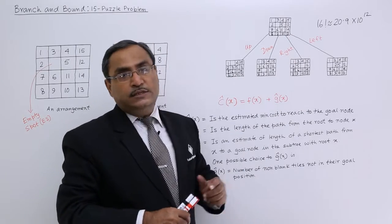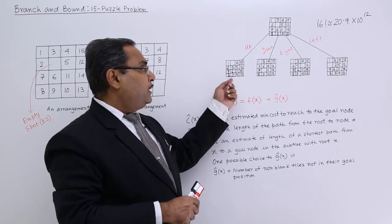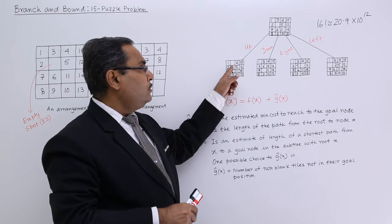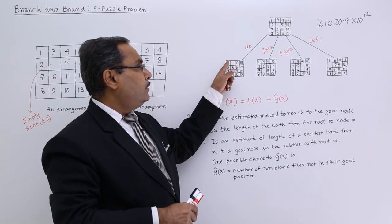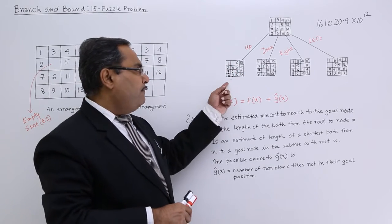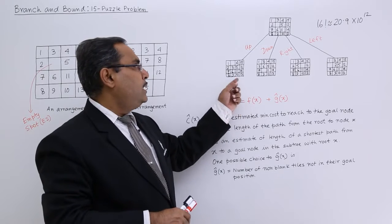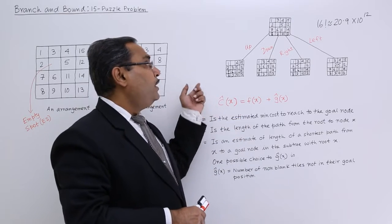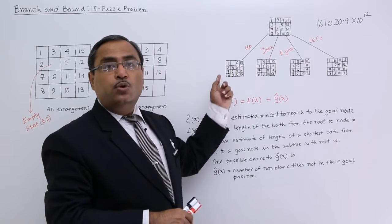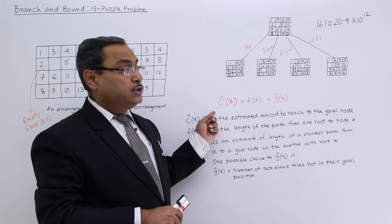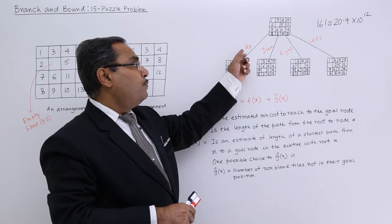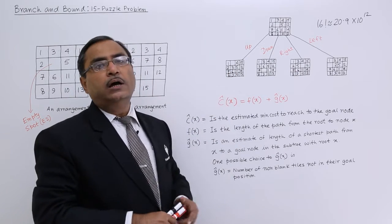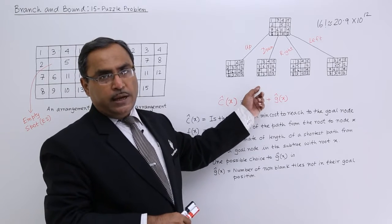In this way we can have four children against this particular node. This node can have three children because the empty spot can go down, right, or left, but while forming its children I should not consider empty spot going down. If you go for the down move then this particular board condition will be repeating as one of the children. So when using up move to get this board condition, then this board position should not have the down move, and here also it should not have any up move.